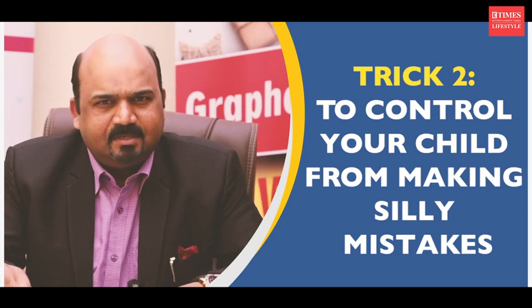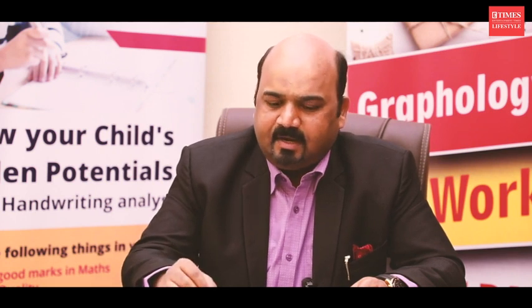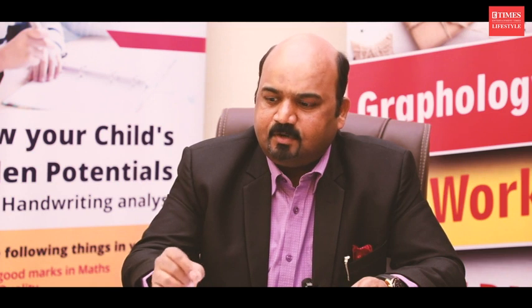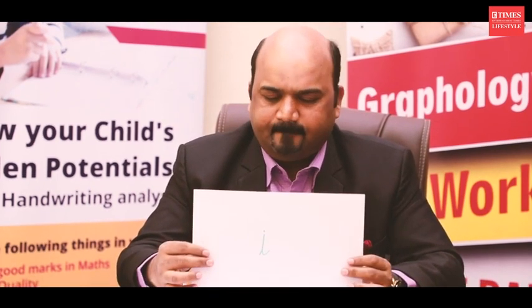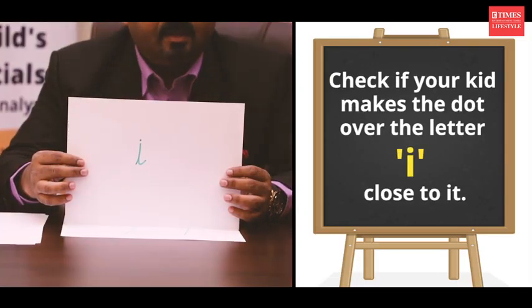The second trait is eye for detail. Parents often say the child makes silly mistakes and loses marks in exams — he knew the answer but wrote the wrong thing. For this, there is something called eye for detail. A person writing in a particular way will have a good eye for details. Observation skill and focusing on small things is very important for children. I'm going to show you one character — the small letter 'i' — and if you have that trait your eye for detail will be very good. Look at the dot on the 'i' — it is very close to the stem.